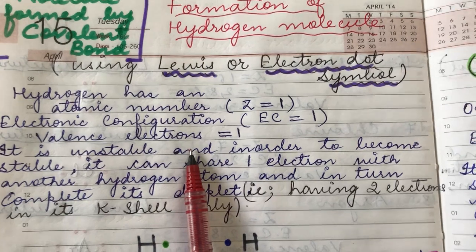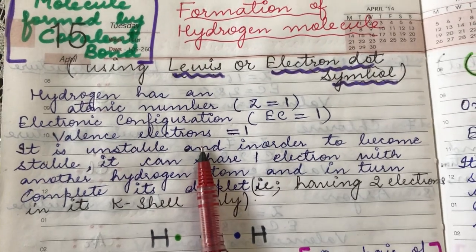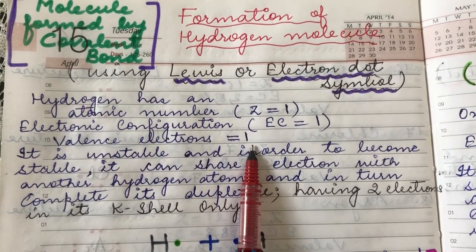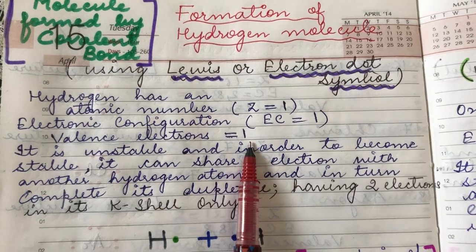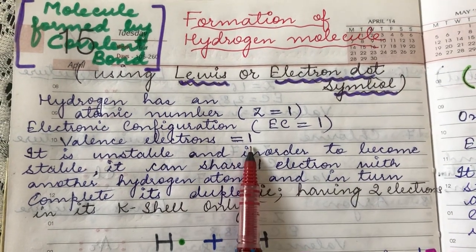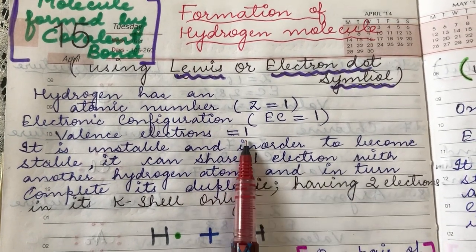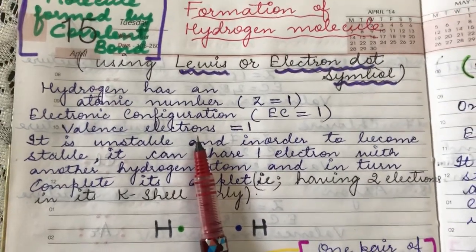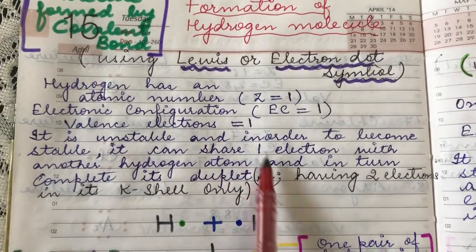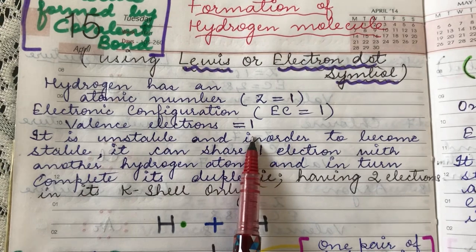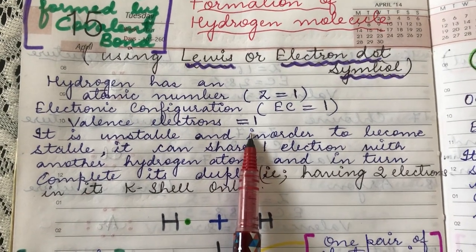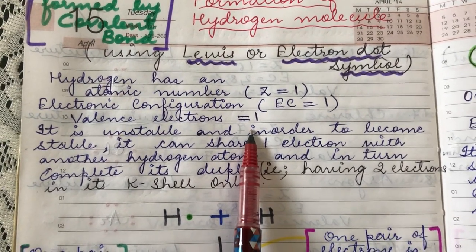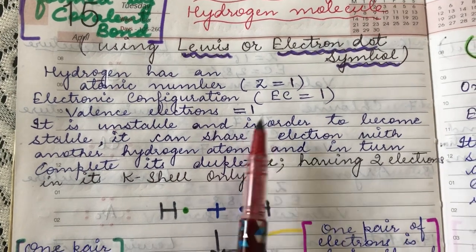Since hydrogen has only one electron in its outermost shell, it is an unstable atom. It is not following the duplet rule, which says it should have two electrons in its K shell — its first and outermost shell. So it needs one more electron to follow the duplet rule.